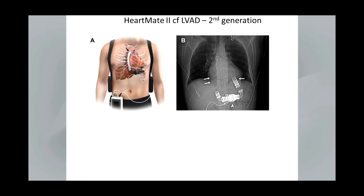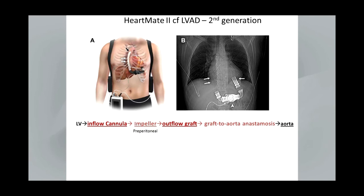Let's look at the different devices now. The first device approved by the FDA for bridge-to-transplant and destination therapy that is continuous flow is the HeartMate 2 device. Common to all of these surgically implanted devices is an inflow cannula that exits the left ventricle. This is attached to a mechanical impeller, which then goes to an outflow graft — the part that can be imaged by echocardiography from parasternal windows. There's an outflow graft to aorta anastomosis, and the image on the right is a CT scout image so that you can see the device position relative to the body.